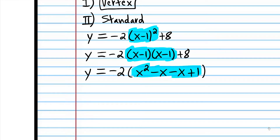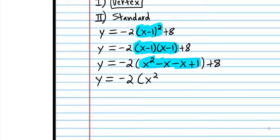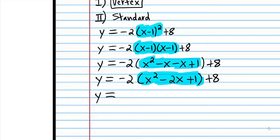Now we need to combine these like terms — negative x minus x is negative 2x, that's just basic algebra. At this point, we're going to multiply these terms by negative 2 using the distributive property. So: negative 2 times x squared is negative 2x squared, negative 2 times negative 2x is positive 4x, and negative 2 times 1 is negative 2.